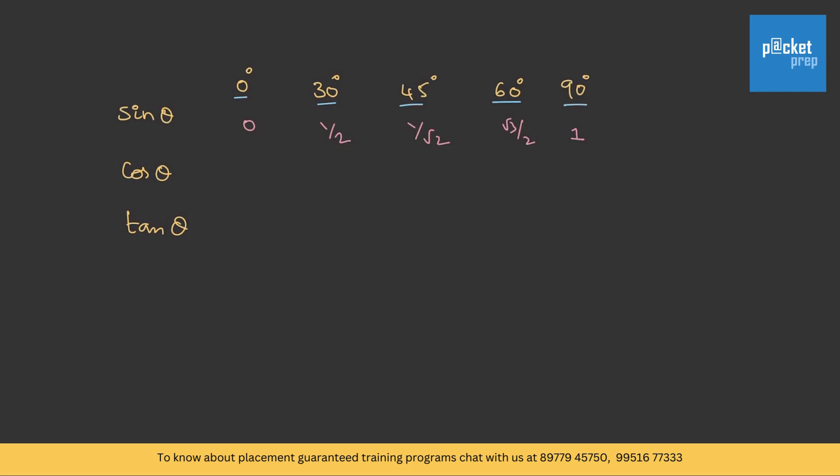For cos theta, these values will be in the reverse order. Whatever is for 90 degrees will be there for 0. So it will be 1, then root 3 by 2, then 1 by root 2, 1 by 2, and 0.